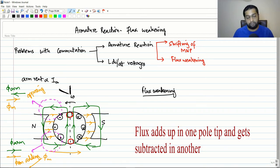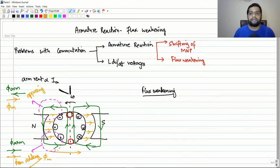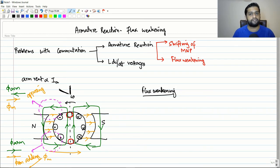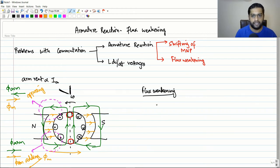You might think that since some amount of flux is getting added and some amount is getting reduced, the net flux should effectively remain the same. But that is not the case — the net flux does not remain the same, for the following reason.